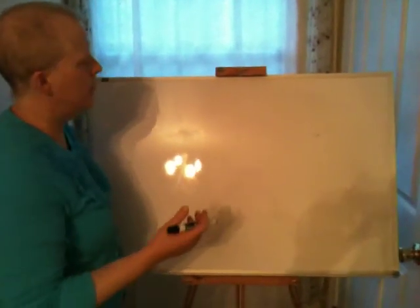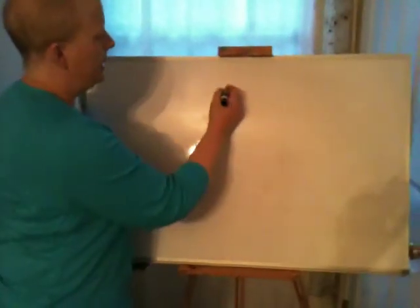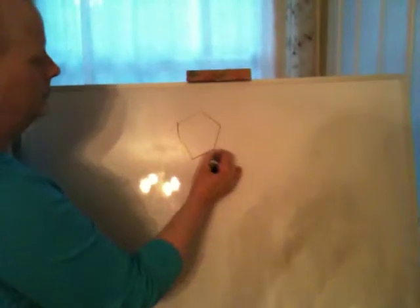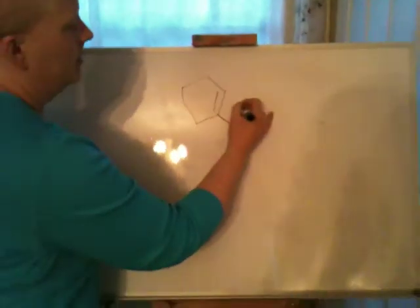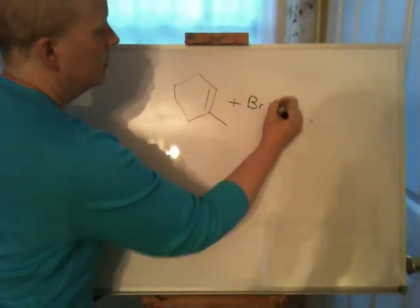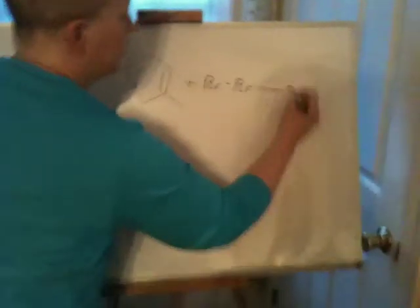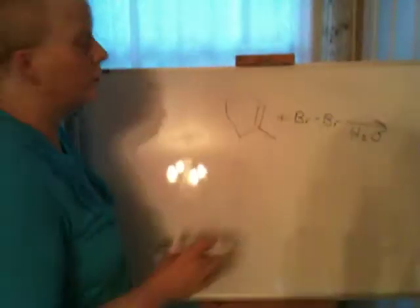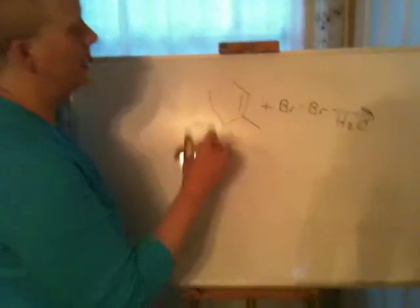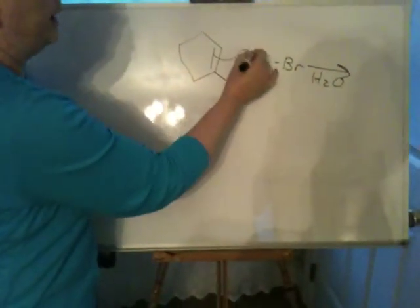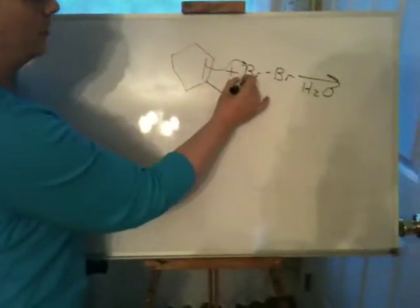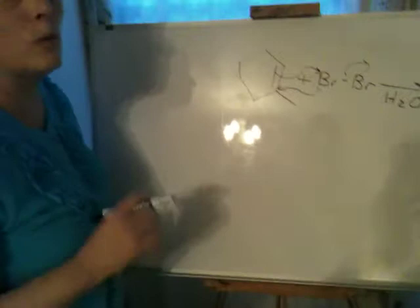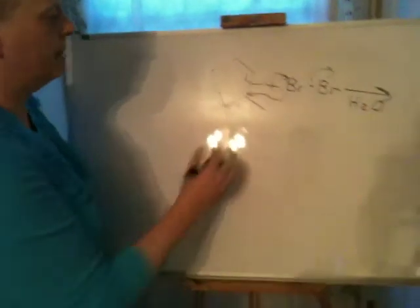So, for example, if I'm making a bromonium ion, as in this case, in the presence of water, which you've seen many times, and you should know how to do this cold. This will attack the Br+, the bromine's lone pairs will bite back on the carbon, and the bromide will leave. And that happens in one step. That is not a multi-step process.